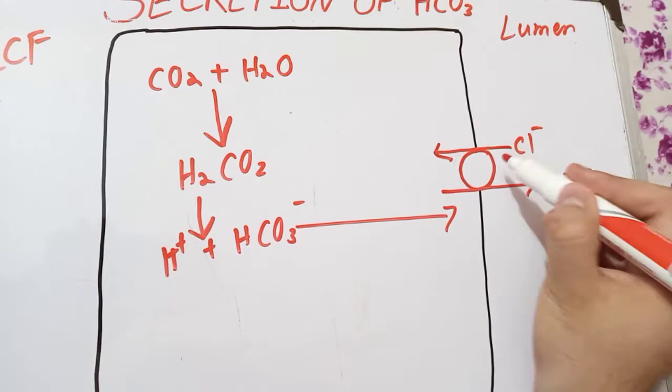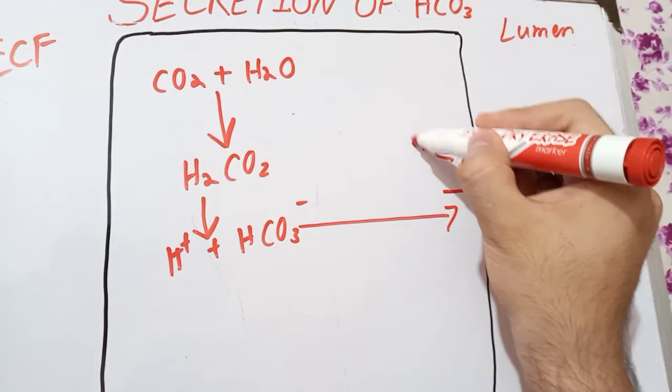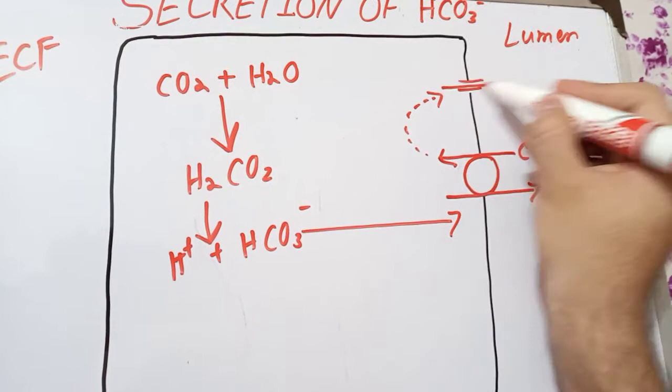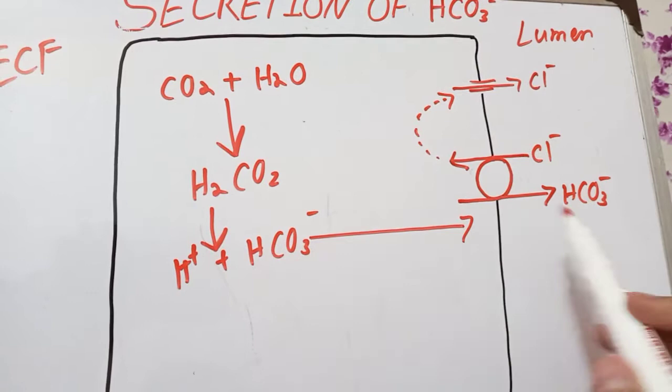Now the chloride ions which have moved inside the cell find another route and through this route they start going out of the cell again. This process repeats again and again so that the chloride ions are recycled, but the bicarbonate ions are secreted into the lumen of the ducts of the pancreas. Now let's talk about the hydrogen ion.